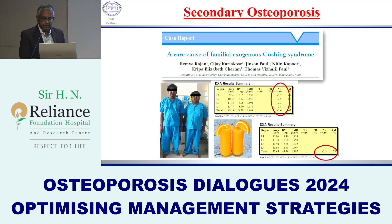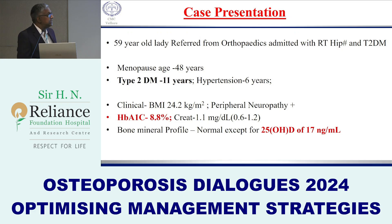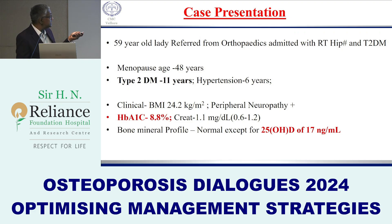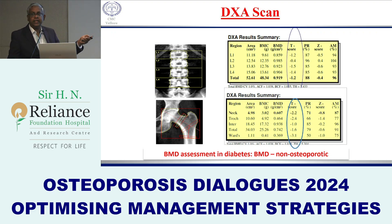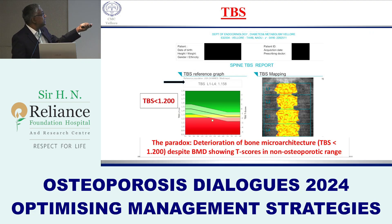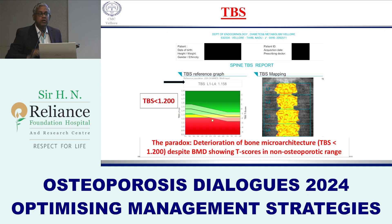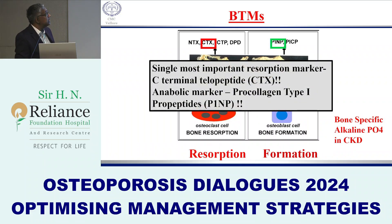Case 8: A 59-year-old woman referred for a right hip fracture with type 2 diabetes for 11 years, poorly controlled, and vitamin D deficiency. Her DEXA scan T-score was not less than minus 2.5 — not osteoporotic by BMD. However, the trabecular bone score (TBS) was 1.158, indicating degraded bone microarchitecture. This illustrates that in diabetes, bone quantity may appear adequate while bone quality is impaired — demonstrating the importance of TBS in diabetic patients.